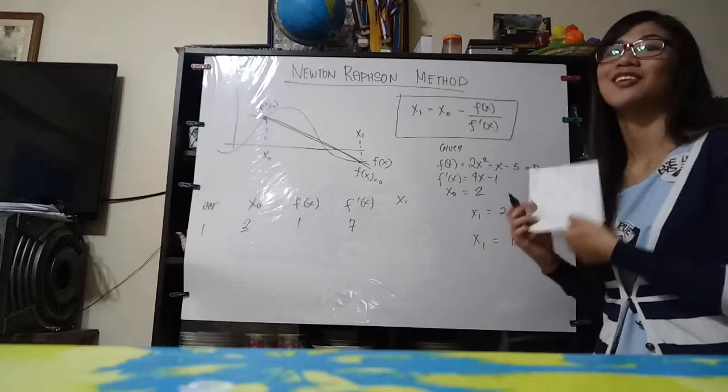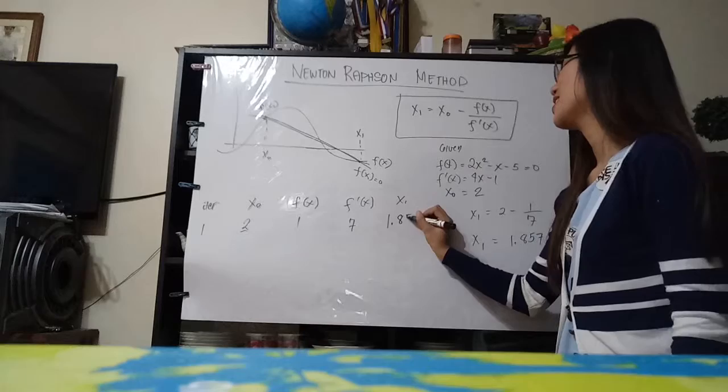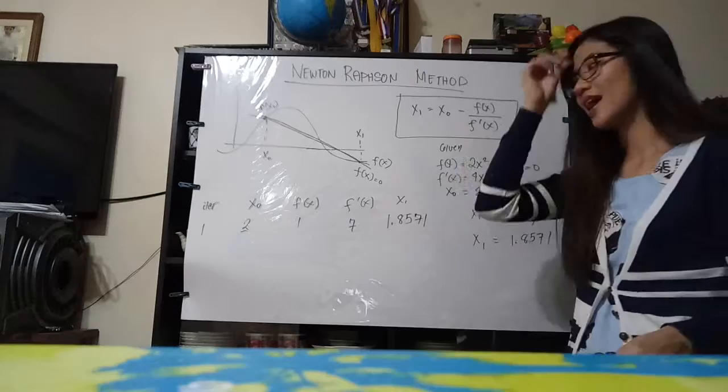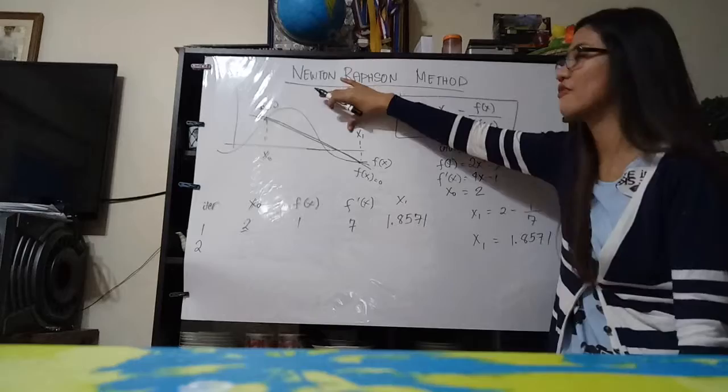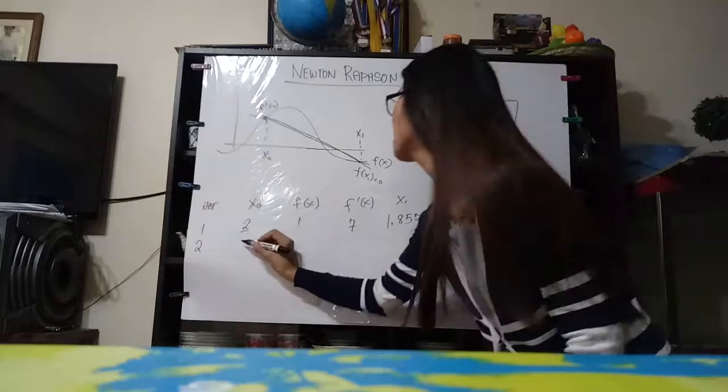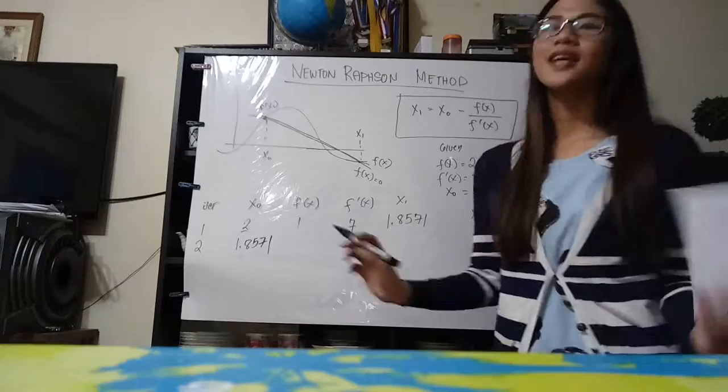Sorry, I've already calculated this and it's in my paper, so we just put it right here: 1.8571. And next is, we go to the next iteration. So for iteration number 2, the value of our x of 1 would be our new x of 0, just like what we did here in our graphical diagram. So this would be our 1.8571.